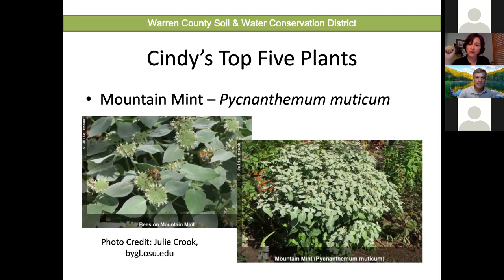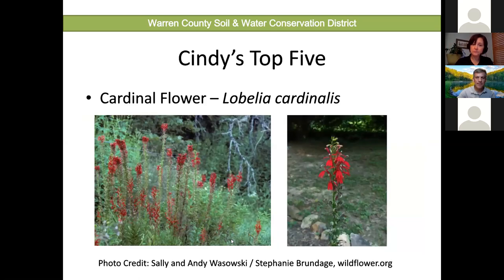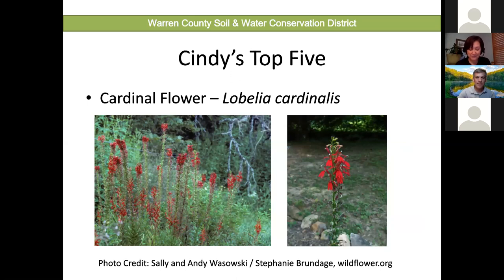The flowers of mountain mint are not really showy—the bracts are the showy part, being really silver, which brings a nice silver color into the garden. Another of my top five is the cardinal flower, which likes sun to part shade. It needs moist areas and may not tolerate consistently wet feet. Birds, butterflies, and hummingbirds really like this plant. An interesting point is that it was used historically for love potions—though I wouldn't recommend it as all parts of this plant are poisonous. It's a good nectar source and a really cool color in the garden.